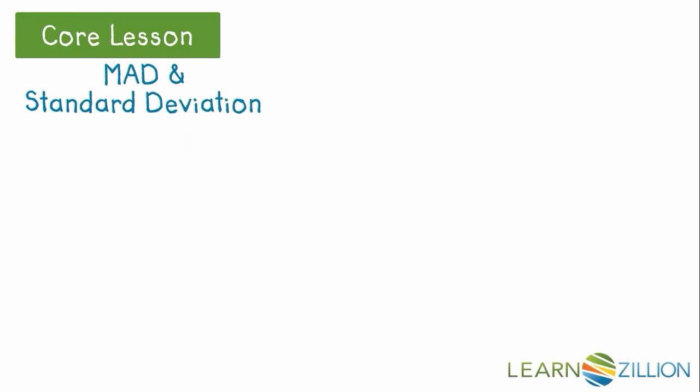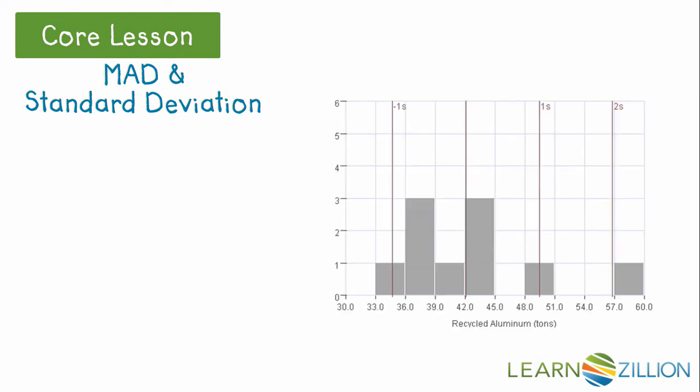Let's take a look at how MAD and standard deviation both show a measure of spread about the mean using the histogram. The mean is highlighted in pink, while plus or minus 1 standard deviation is highlighted in blue, as well as indicated above with brackets.